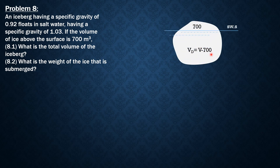So this is the situation — above the salt water surface is 700 cubic meters. Therefore, the volume that is displaced or submerged is the total volume of the iceberg minus 700.